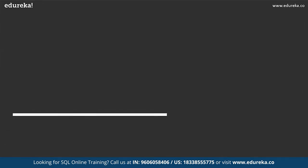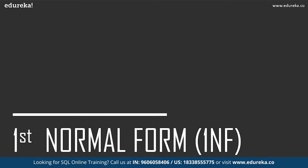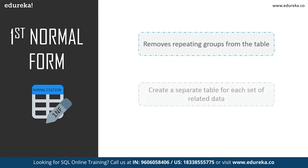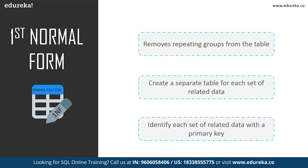Let's proceed to first normal form. In first normal form, we tackle the problem of atomicity. Atomicity means values in the table should not be further divided — a single cell cannot hold multiple values. If a table contains composite or multi-valued attributes, it violates the first normal form. The following operations are performed: it removes repeating groups, creates a separate table for each set of related data, and identifies each set with a primary key.